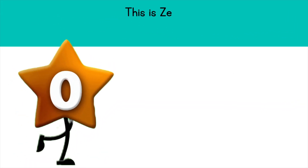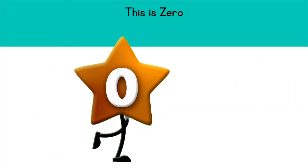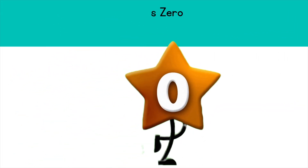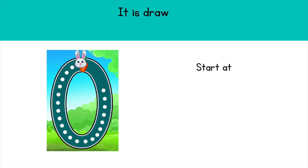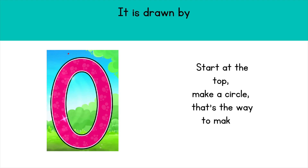This is zero. It is drawn by starting at the top and making a circle. That's the way to make a zero.